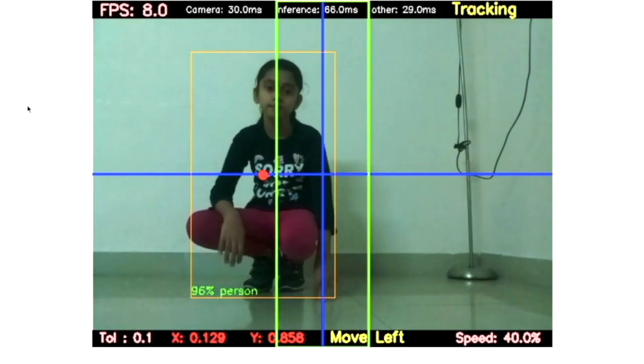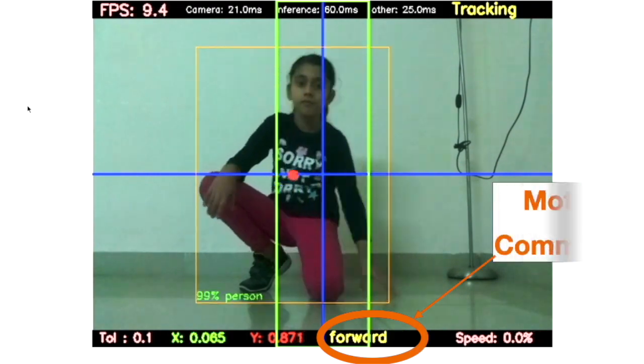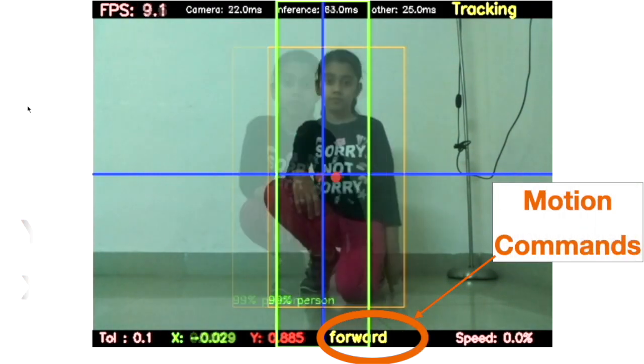In robot's view, you can see these values getting changed in real time. Observe how the motion command is generated based on the location of person.